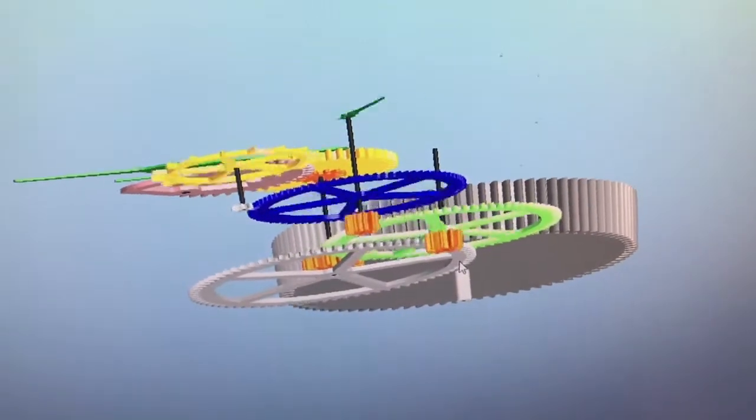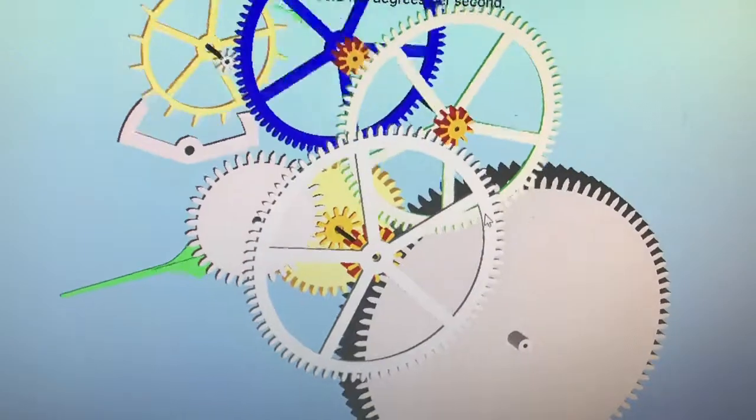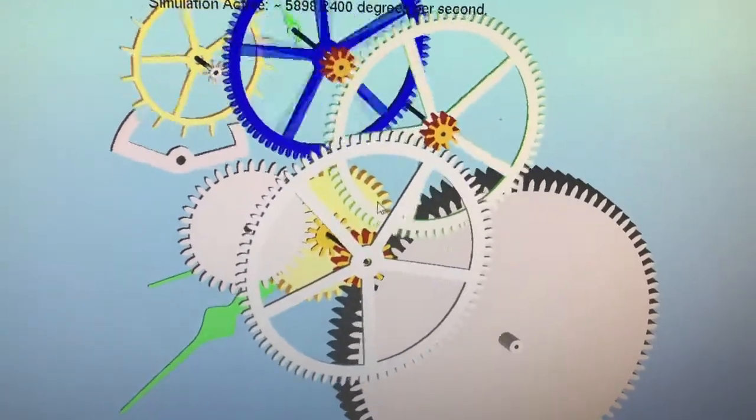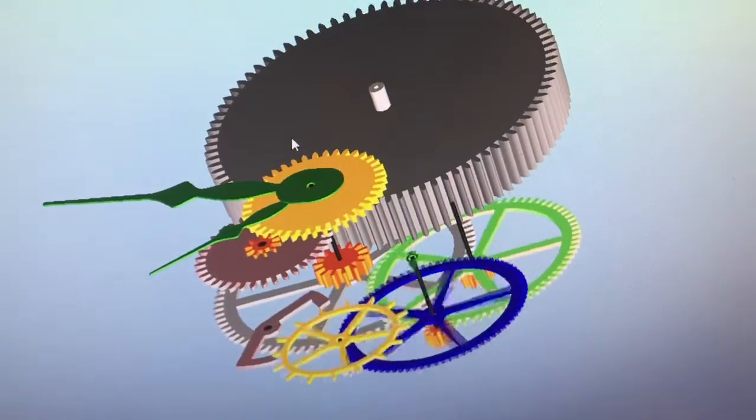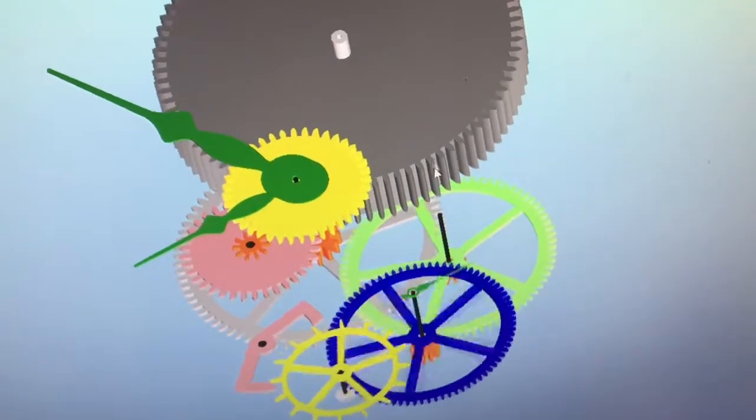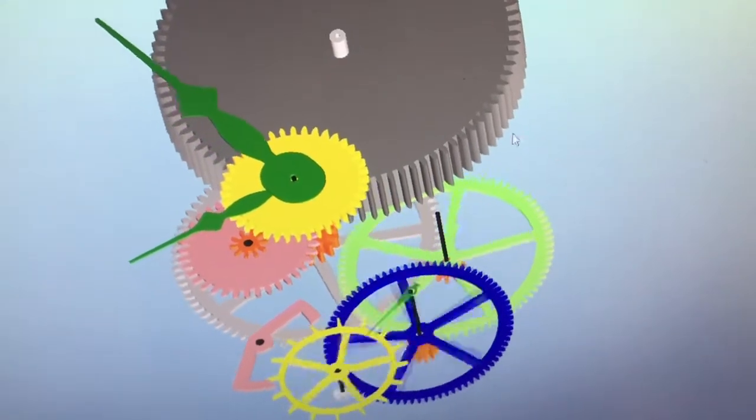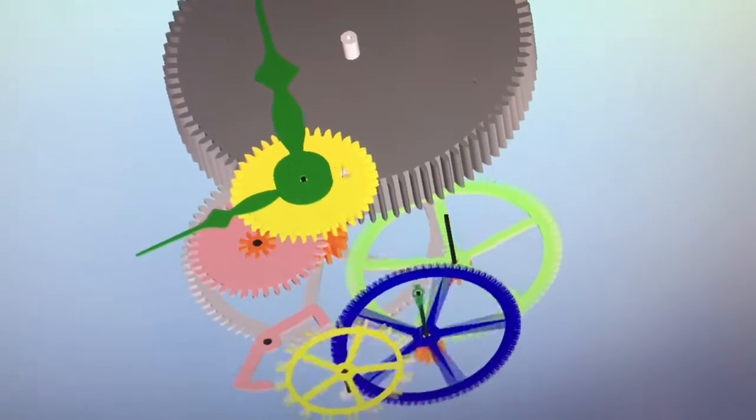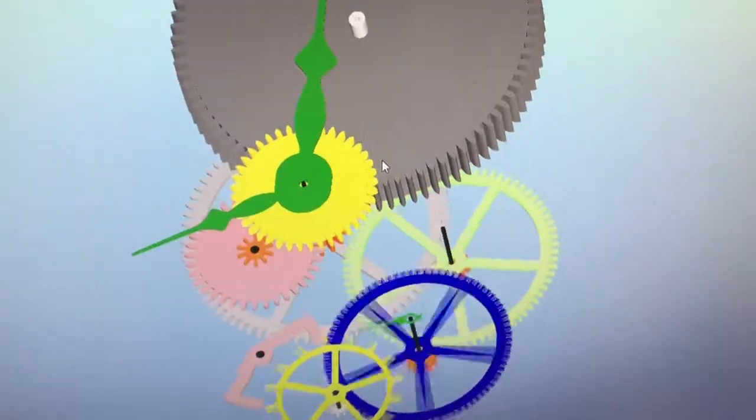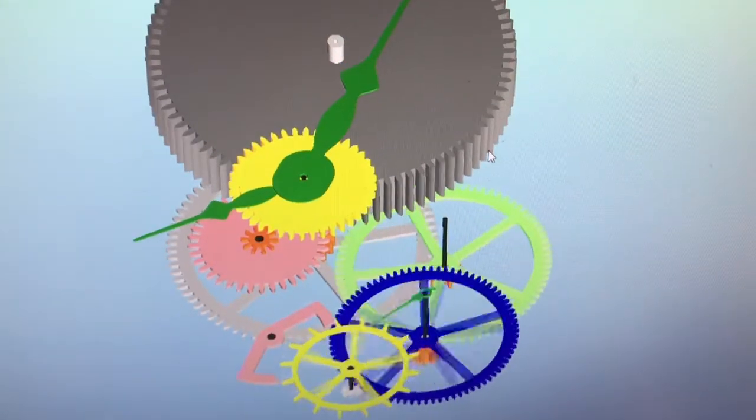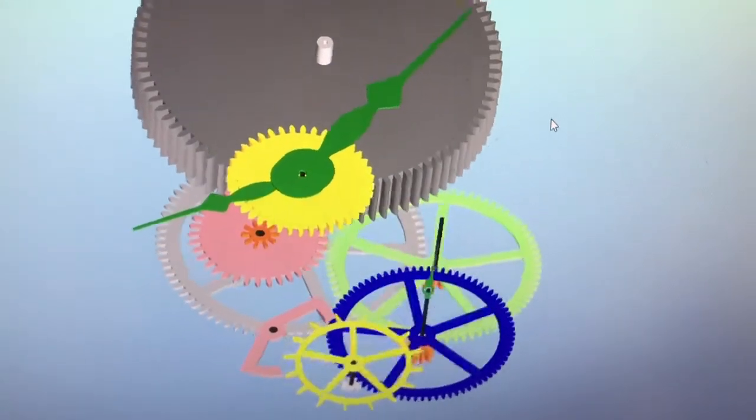That is the modeling of a Hamilton S12 pocket watch. Now I could take this model and send each gear to a CAD program. Within this program there's a program called Vex, I believe, and you can actually export this to a three-axis CNC machine and cut these gears.